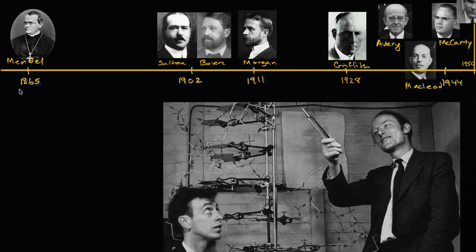In 1865, Mendel, often considered the father of modern genetics, comes up with a structured way of thinking about these inheritable factors, which we now call genes.